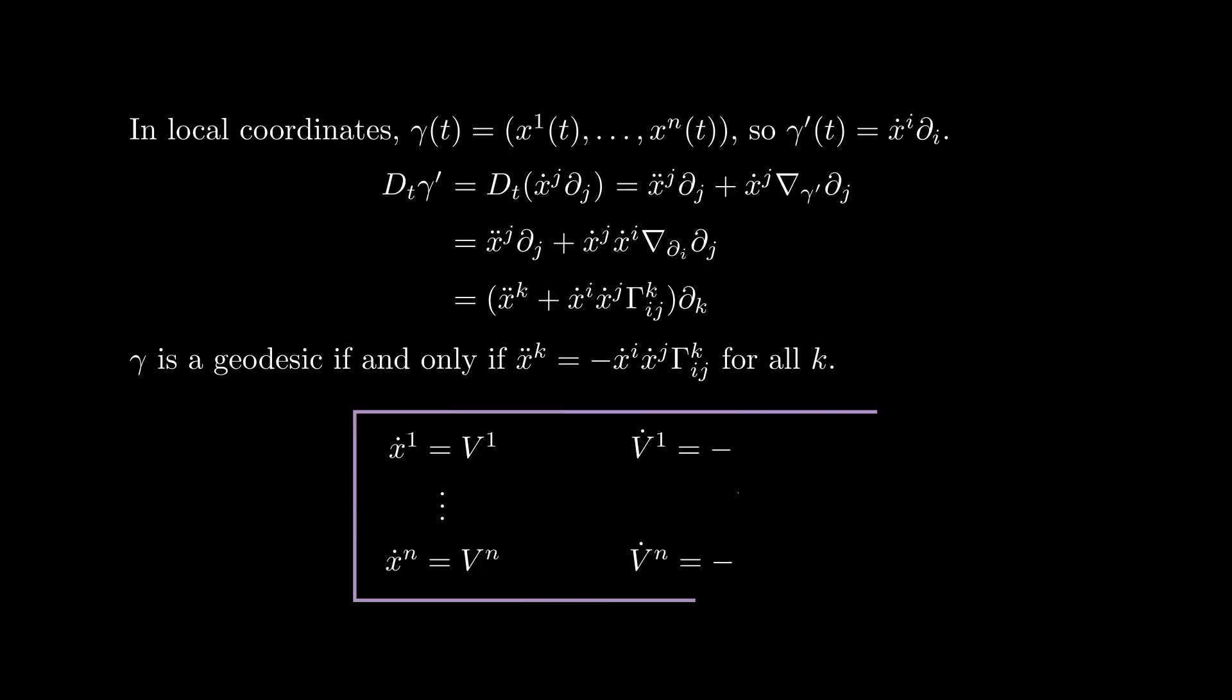We can now apply the standard trick of introducing more variables to turn this second-order equation into a first-order equation. What we do is introduce the variables v1, v2, and so on, and force them to be the derivatives of the variables x1, x2, and so on. Then the second derivatives of the xi's are the first derivatives of the vi's, and we get this first-order equation of two n variables.